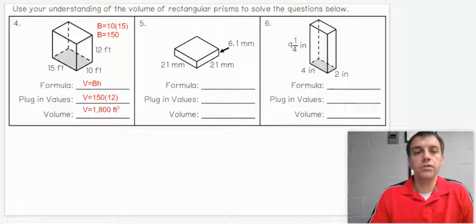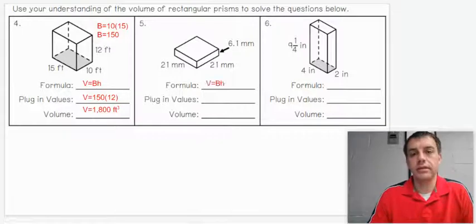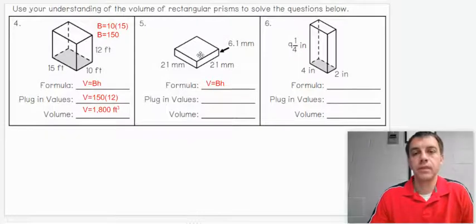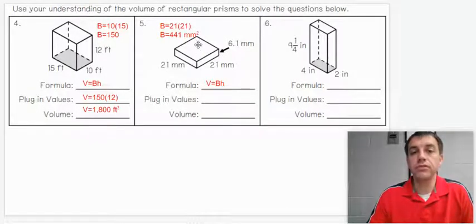Let's get on to the next one. Same formula. Volume equals base area times height. What is our base area? What is the shape that is underneath and on top of this object? Hopefully you say a square because we see 21 by 21. There's a height of 6.1, but let's look for the base area first. We have 21 times 21. If I simplify that, I should get 441. Notice I put millimeters squared because we already have the area here.